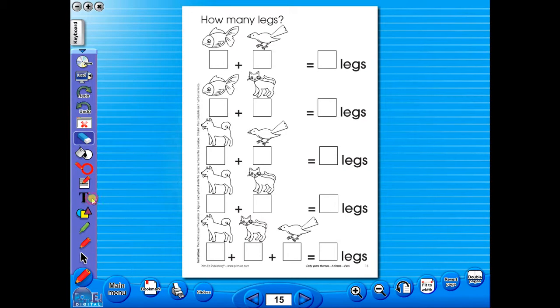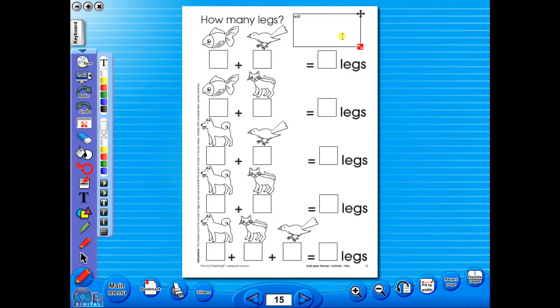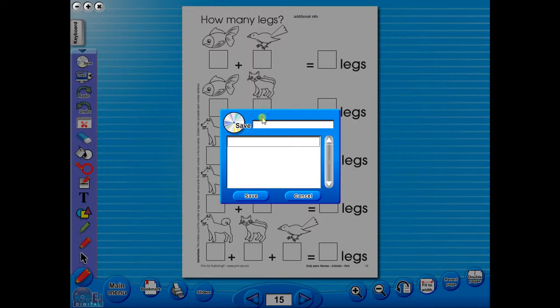Insert a text box to add an additional question or a hint to a worksheet for the pupils. To save your edited worksheet, just click on the save icon.